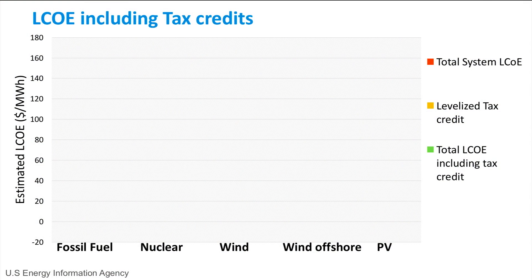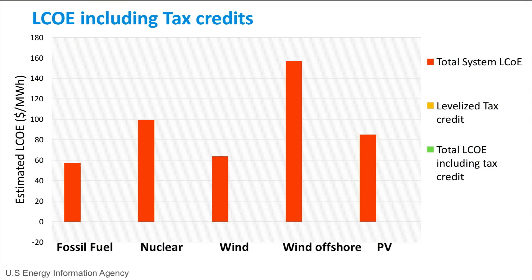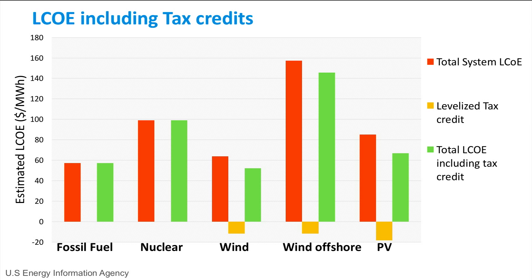From the previous lecture, we know that the total system LCOE is shown in orange. If we consider the levelized tax credit shown in yellow, which is available for renewable energy technologies, we get a negative levelized tax credit in dollars per megawatt hour. The new total LCOE, considering the tax credit, is shown in green, and would hence be lower than the previous total system LCOE calculated without including tax credits.